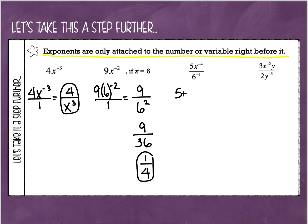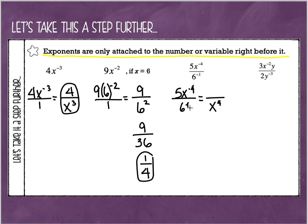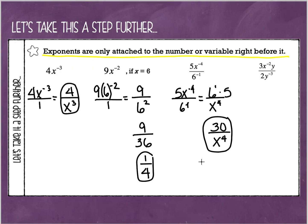The next example is 5x to the negative 4th over 6 to the negative 1st. This is already a fraction, so I didn't need to put it over 1. The negative 4 is only attached to the x, so to make it positive I move the x down to the denominator as x to the 4th. The 6 to the negative 1st power needs to move to the numerator to become positive 1st, and the 5 that was already on top multiplies with it — 6 to the 1st times 5 is 30. My simplified expression is 30 over x to the 4th.